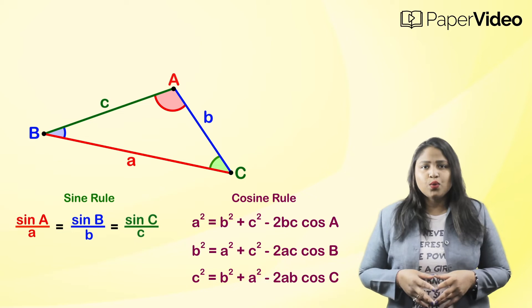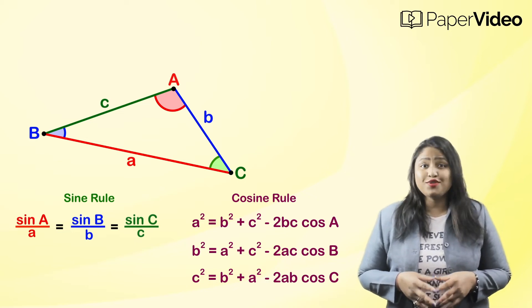There is one more rule which helps us to find the missing sides or angles of a triangle and that is known as the projection rule.